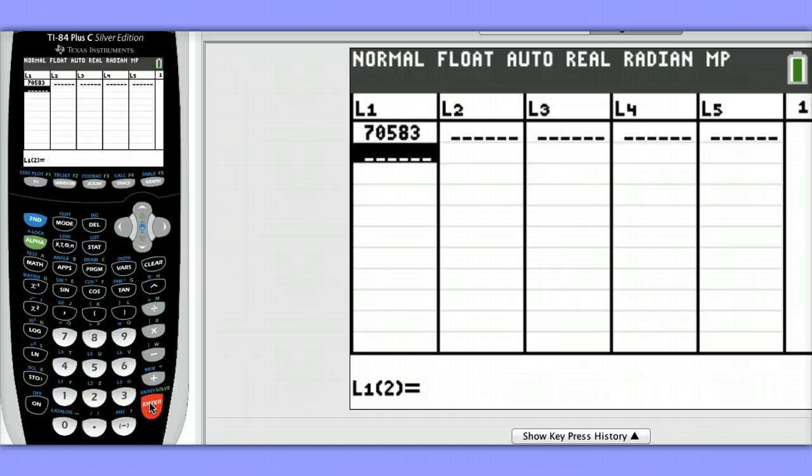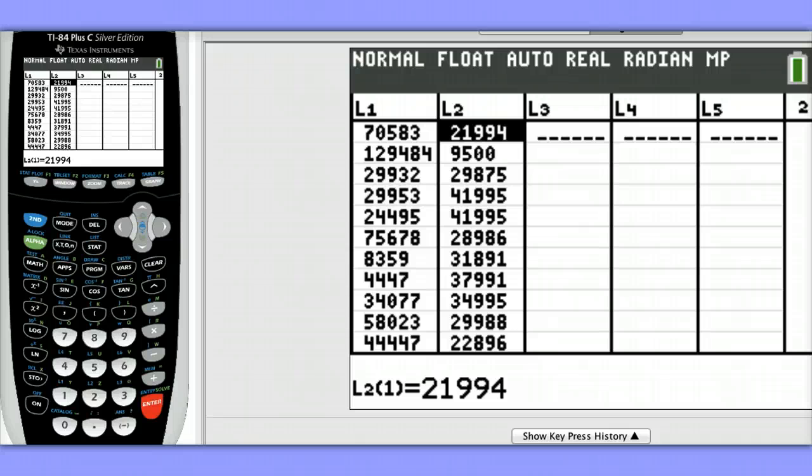In List 2, we'll be entering the price in dollars. Now that our data is entered, we're ready to calculate our confidence interval for the slope.